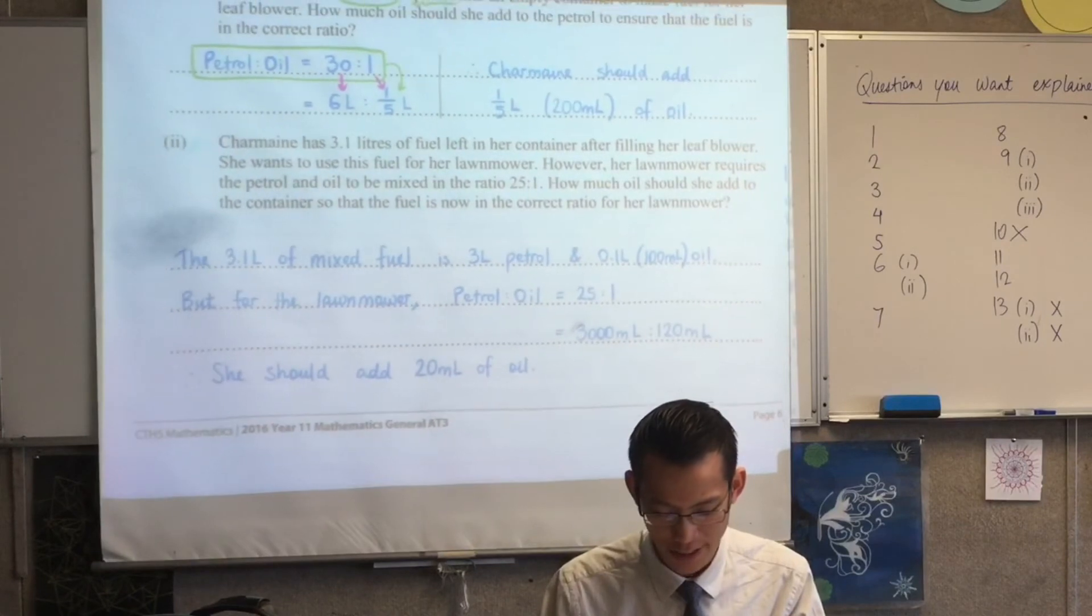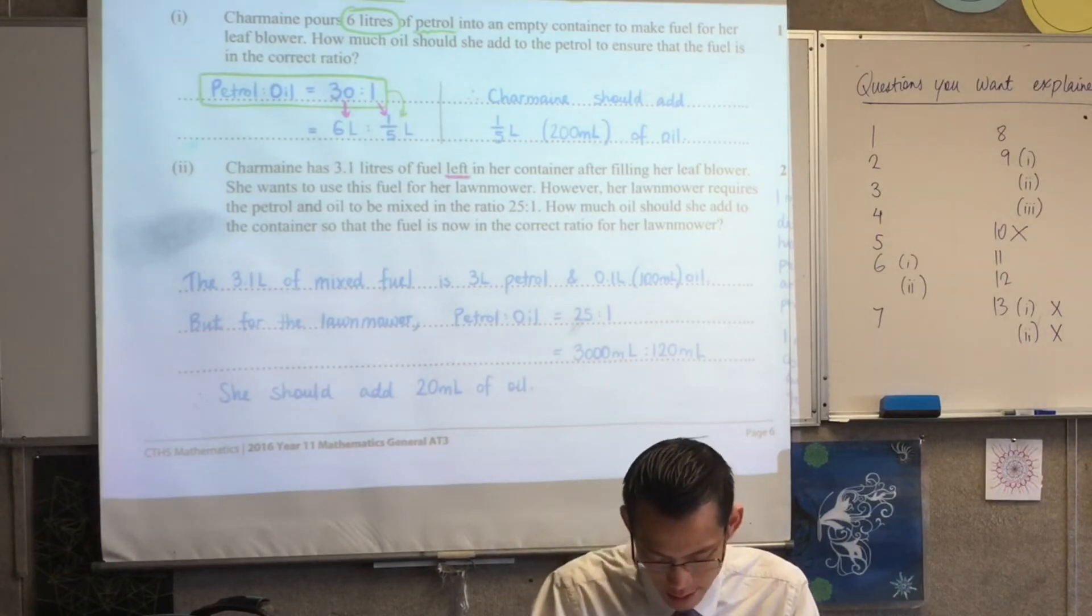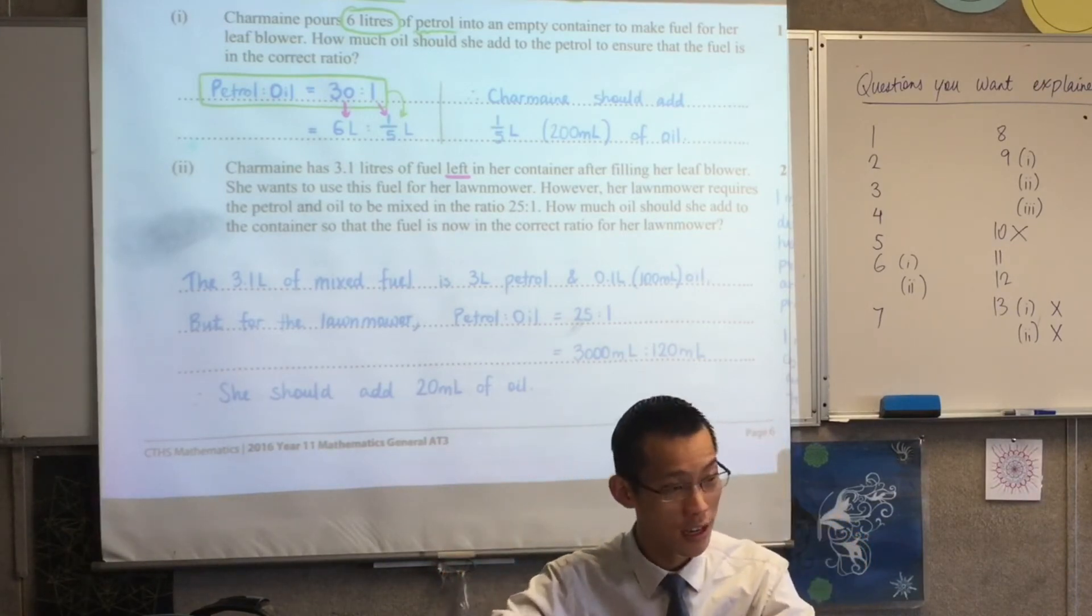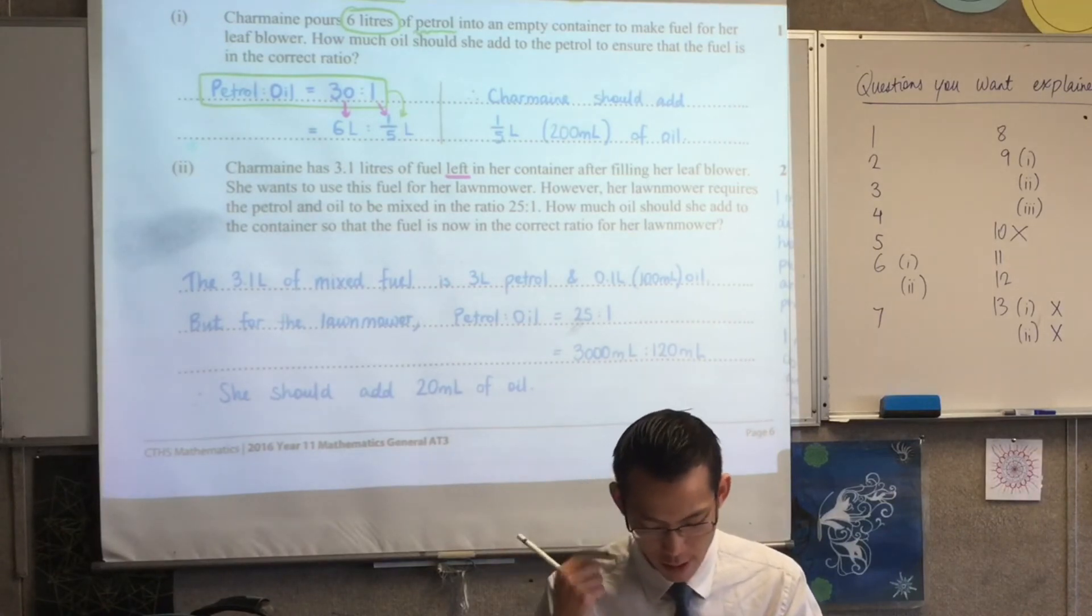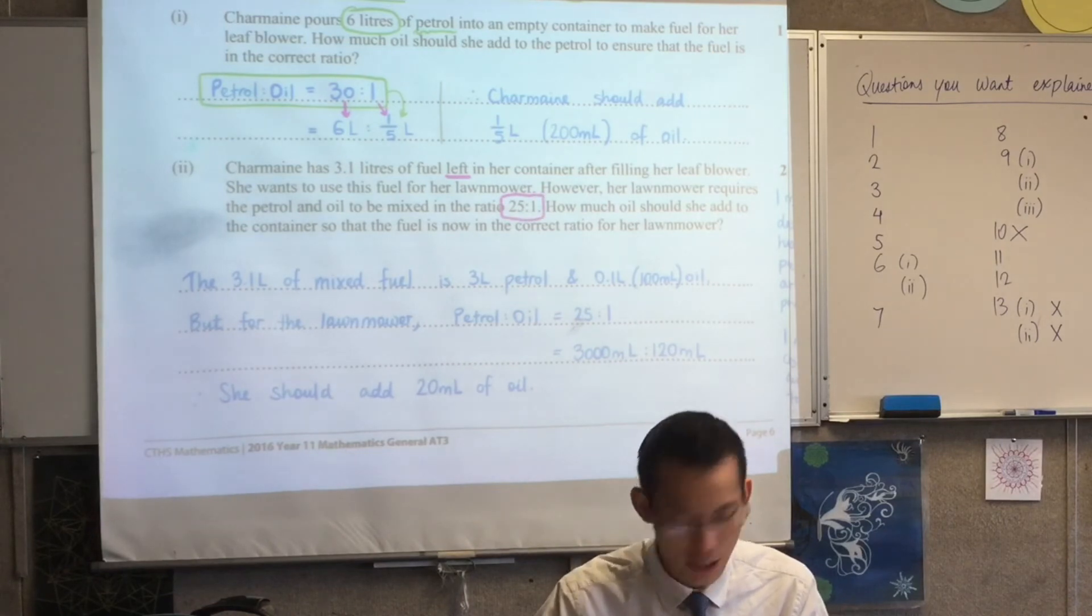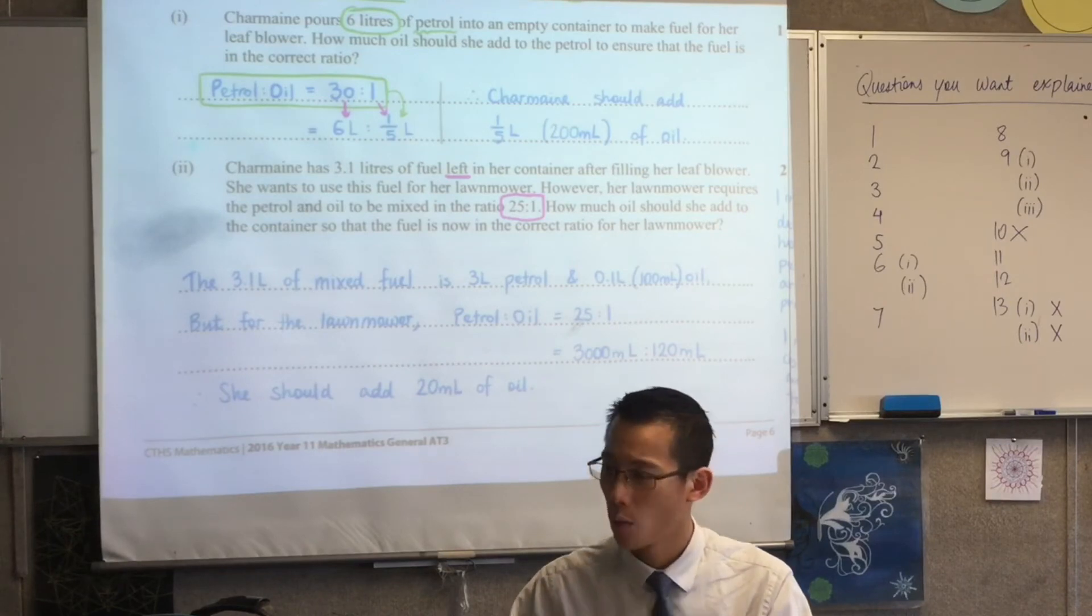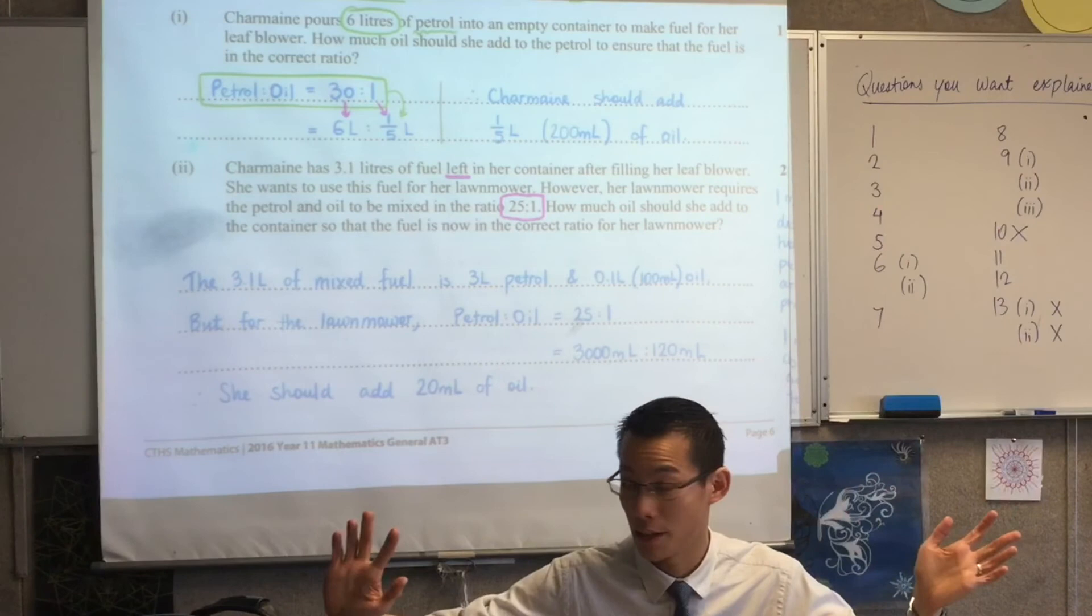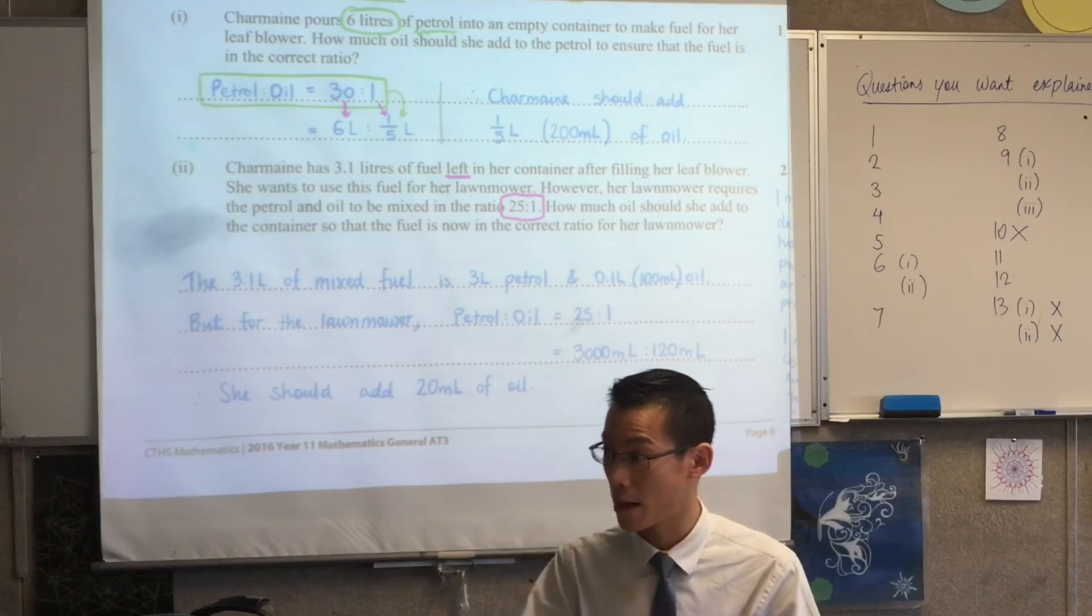All right. Now, here it gets a bit tricky. Read carefully with me. Let's read nice and slowly. Charmaine has 3.1 liters of fuel left in her container after filling her leaf blower. Does this, are you seeing how this continues from the previous question, right? She made up this amount. She started pouring it in. It's like, oh, I'm done. Okay. So now she's got this leftover. She wants to use this fuel for her lawnmower, but her lawnmower requires the petrol and oil to be mixed in a different ratio. So think about this. 30 to one versus 25 to one. Which one has more petrol and which one has more oil? The lawnmower needs more oil, right? Needs more oil because you've got a smaller ratio of petrol in there to the same amount of oil.